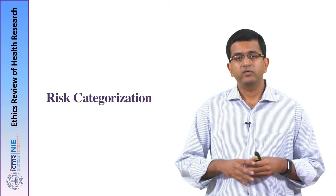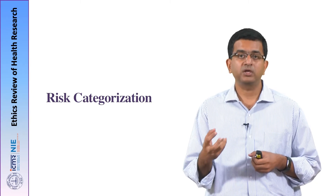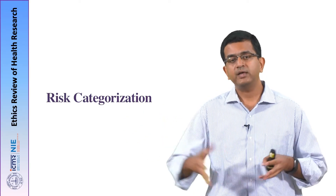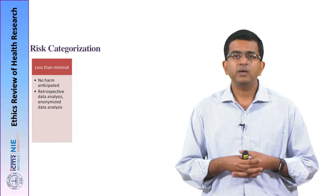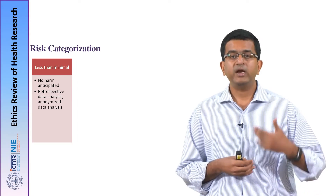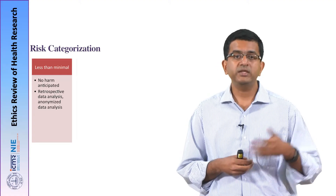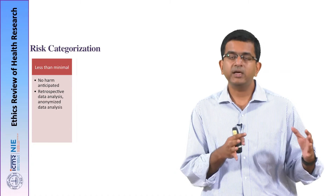In the next few minutes, we will talk about risk categorization — an aspect of understanding the burden of risk carried in any given research project. There are four broad categories of risks. The first is called less than minimal risk. Studies in this category have almost no anticipated harm from participation. Typical examples are retrospective data analysis from secondary data and anonymized samples or anonymized data used for analysis — practically no harms are anticipated.